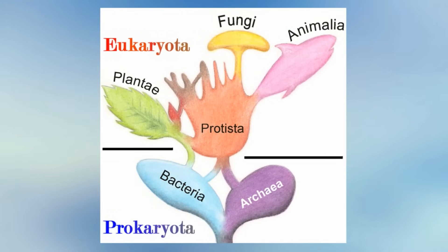For many years, there were only five kingdoms. Kingdom Monera is now divided into two kingdoms, Bacteria and Archaeobacteria. Let's take a look at these six kingdoms and their characteristics.